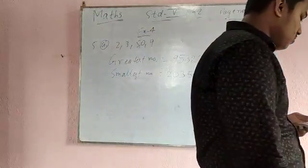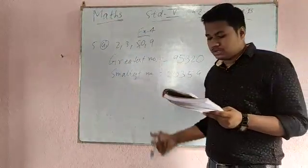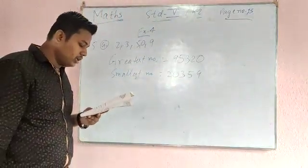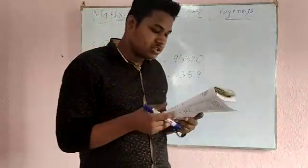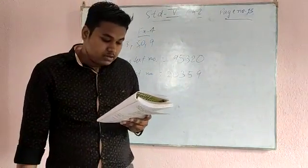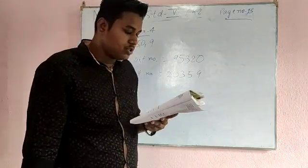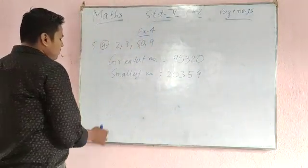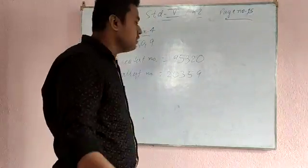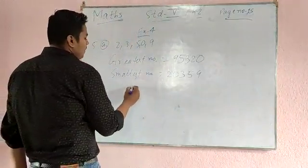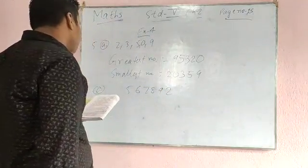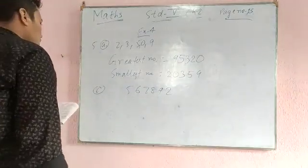Got it? So with the help of the first number, you just do the rest. Question number 6 is: write any number of 7 digits. Any number you just choose. Write another number by reversing the digits. Find which of the two numbers is smaller. So as an example I am giving you, I am choosing a 5-digit number of my own choice: 5, 6, 7, 8, 9, 2. This is my choice.